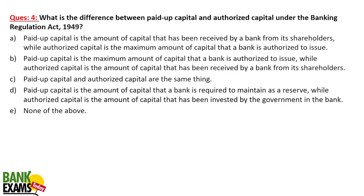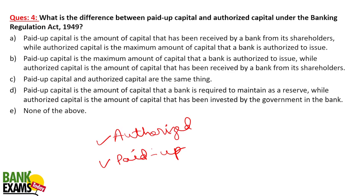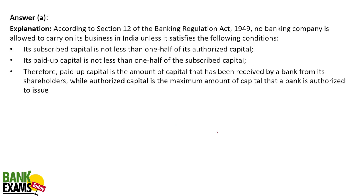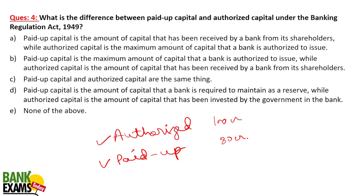Question 4: What is the difference between paid-up capital and authorized capital under the Banking Regulation Act? Authorized capital is the maximum capital that a bank is authorized to raise — for example, 100 crore. Paid-up capital is the amount actually received from shareholders — for example, 80 crore issued so far. Answer A: paid-up capital is the amount received by a bank from its shareholders, while authorized capital is the maximum amount a bank is authorized to raise.